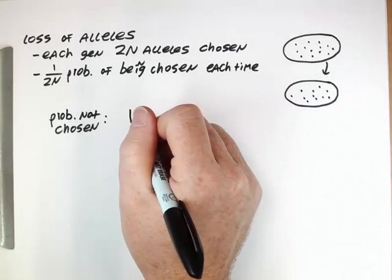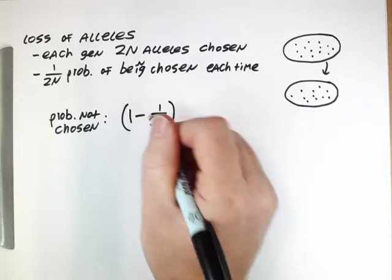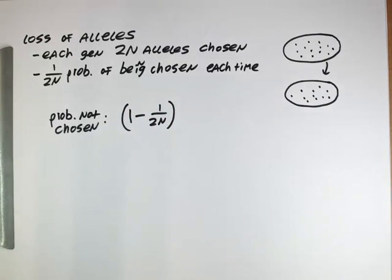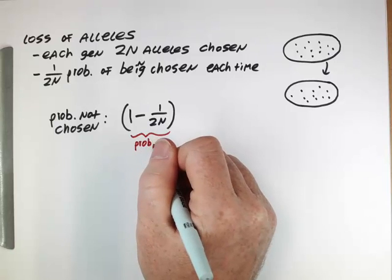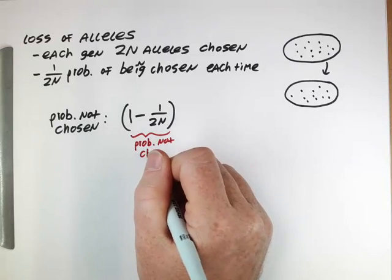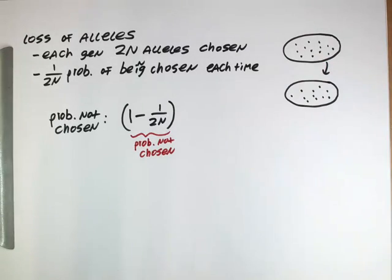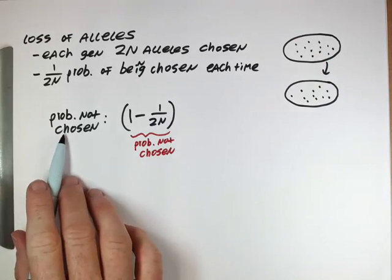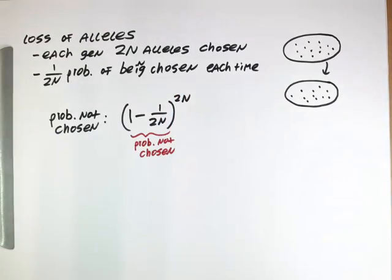So those 2n choices occur, and an allele is not chosen. Well, it's the probability that it wasn't chosen the first time. So if 1 over 2n is the probability of being chosen, 1 minus 1 over 2n is the probability of not being chosen. And then during this reproduction, we were choosing 2n alleles. So in order for it not to be chosen at all, it has to not be chosen 2n times.